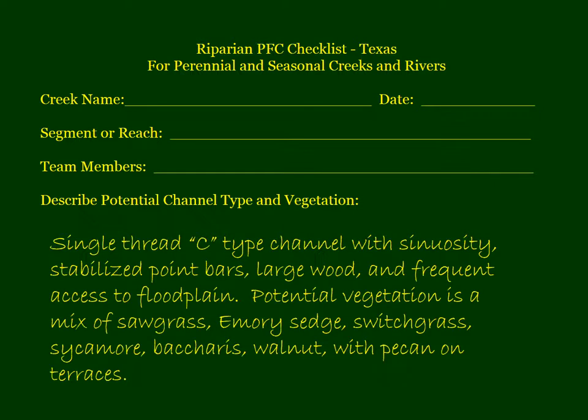There's a block for describing the potential channel type and vegetation — for example, you might say that Bear Creek should be a single-thread C-type channel using the Rosgen stream classification system, with sinuosity, stabilized point bars, large wood, and frequent access to floodplain. The potential vegetation might be a mix of sawgrass, emery sedge, switchgrass, sycamore, baccarus, and walnut, with pecan on the terraces. This would be the benchmark of what the potential is.